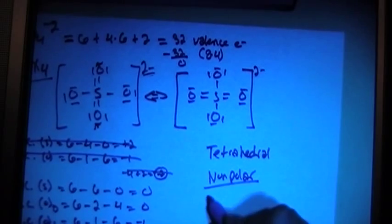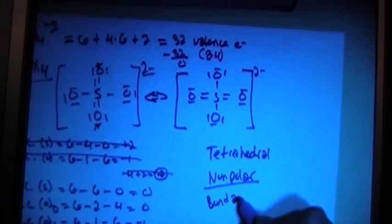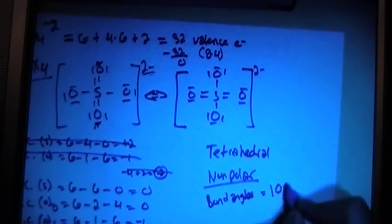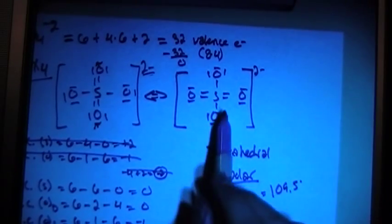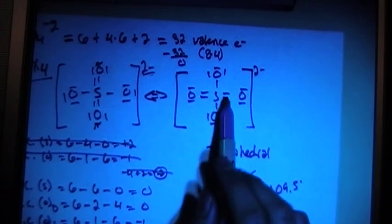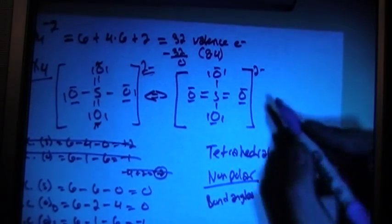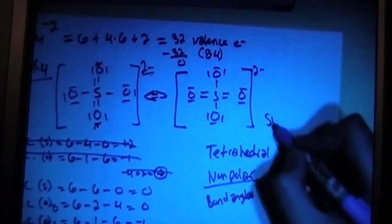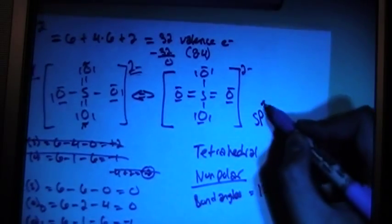And because it's a tetrahedral, the bond angles are going to be approximately 109.5 degrees. And the hybridization of the sulfur in the center, there's four bonding sites, four bonding atoms. So it's going to be an SP3 hybrid.